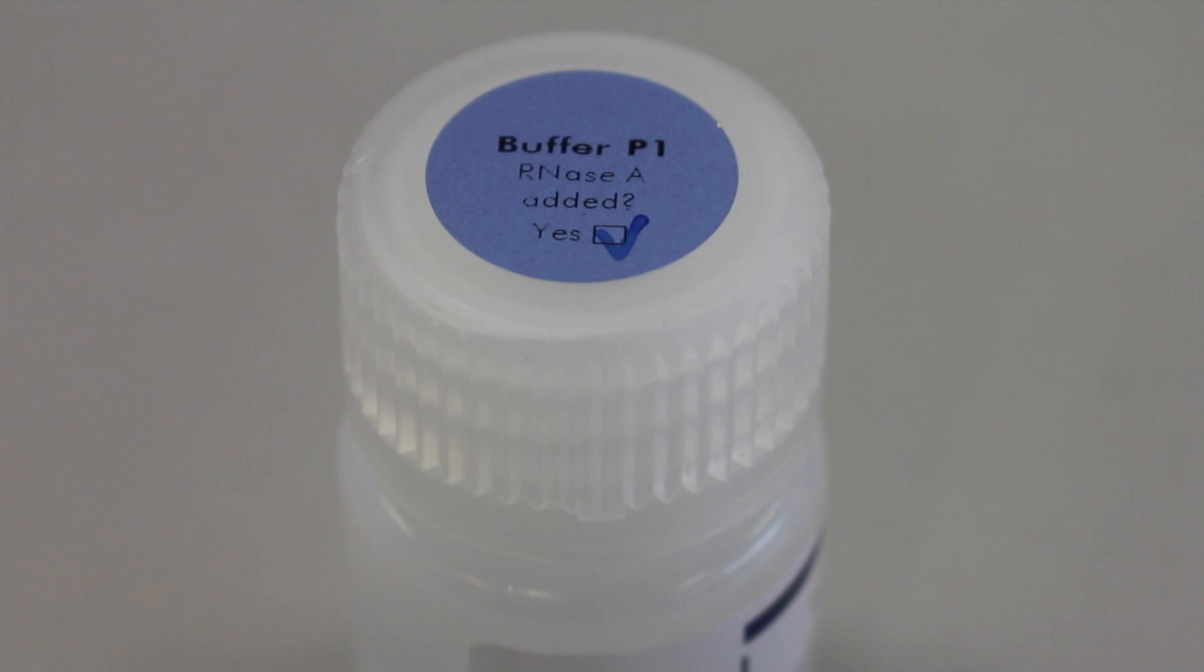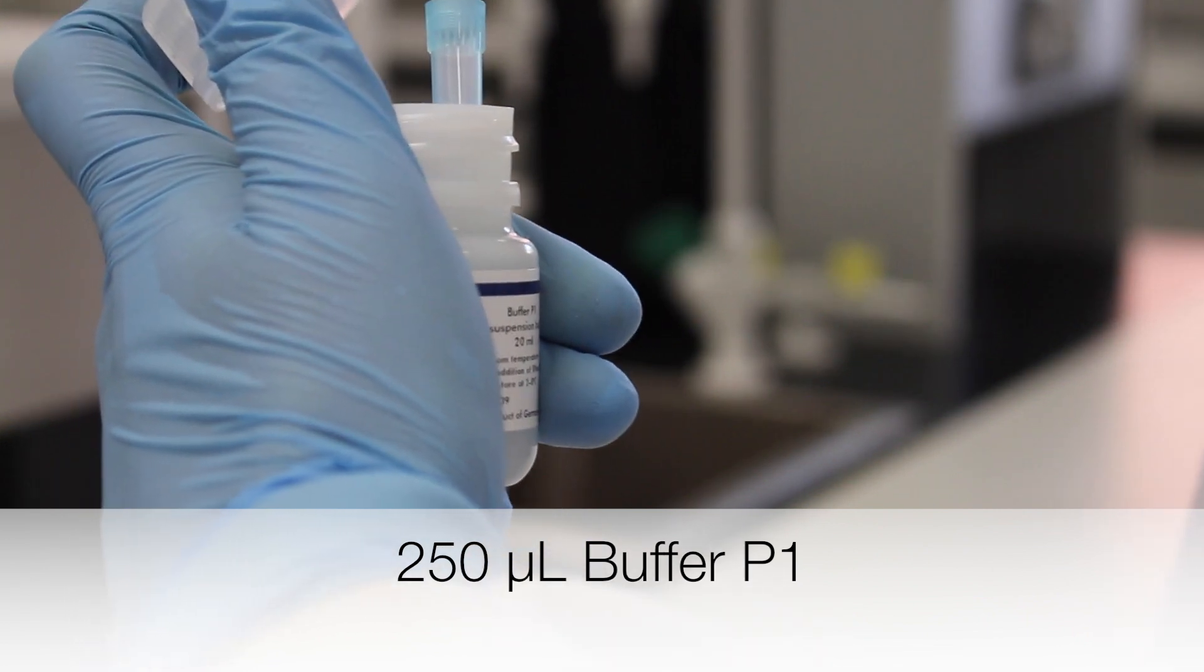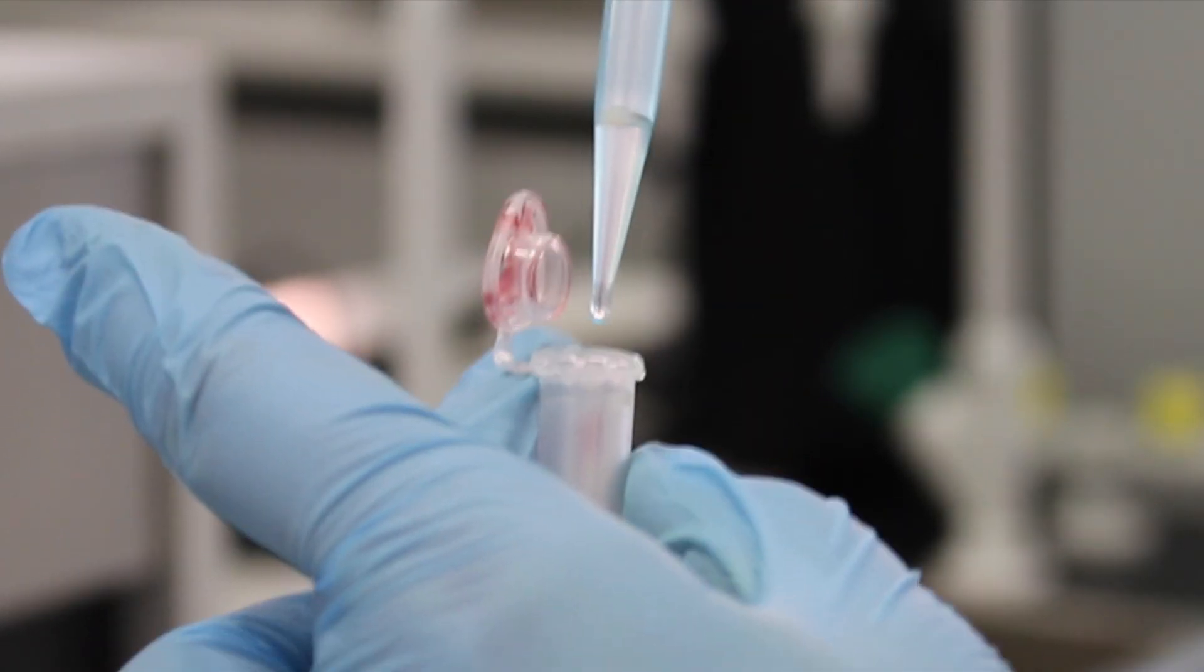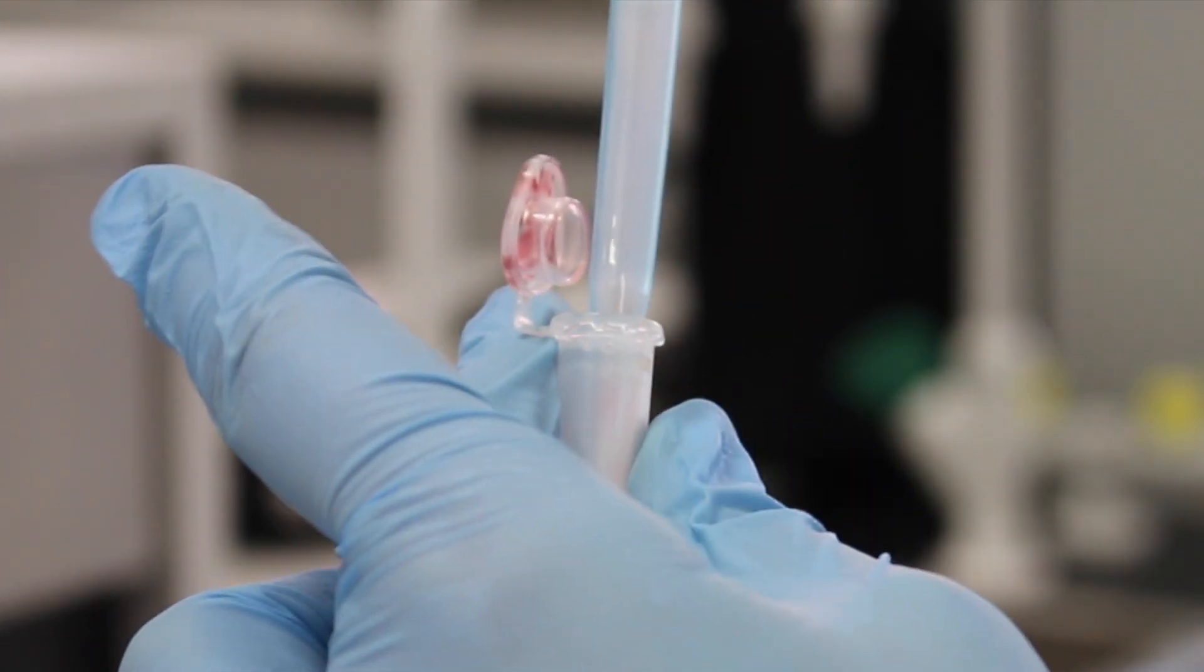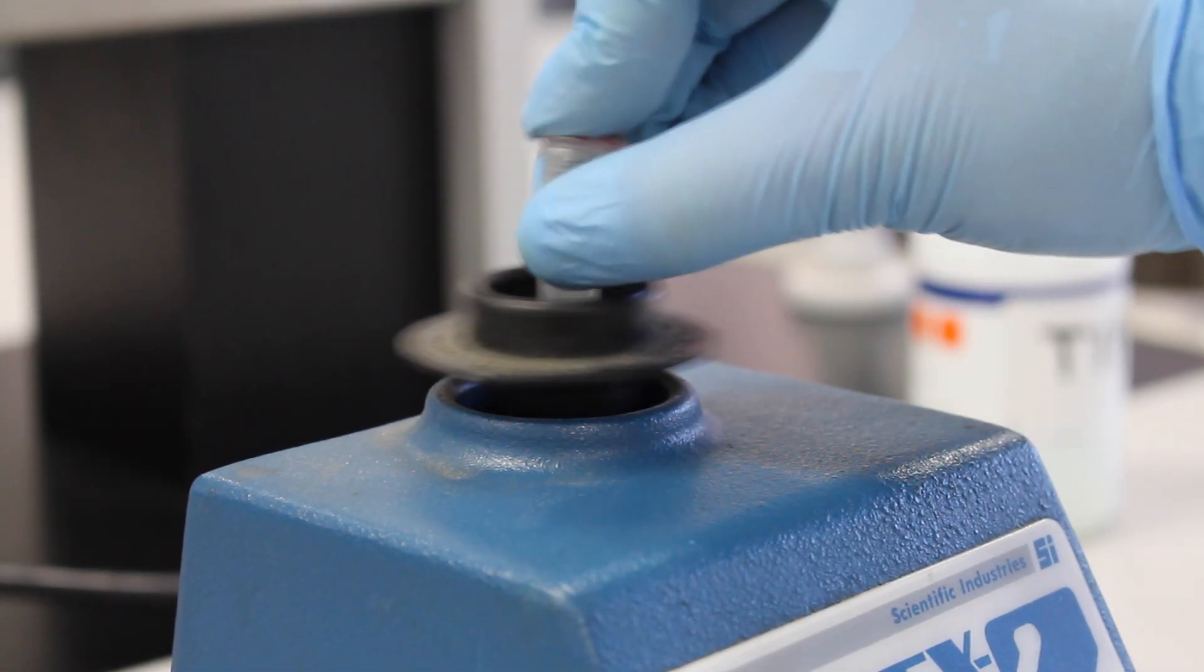This will prevent the cells from being associated with the waste. 250 microliters of buffer P1 is added to each tube. This buffer destabilizes the cell membrane and macromolecules. This will allow the DNA to be separated from other cell components. The tubes are vortexed to make sure that the entire pellet has been resuspended.